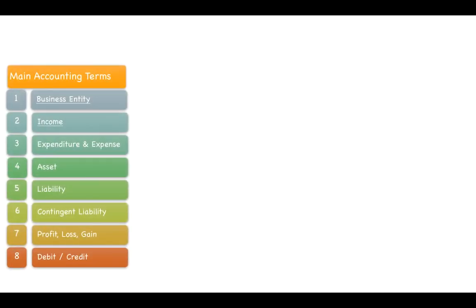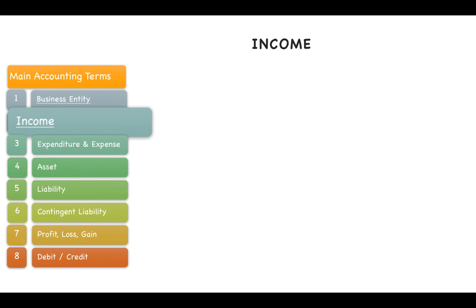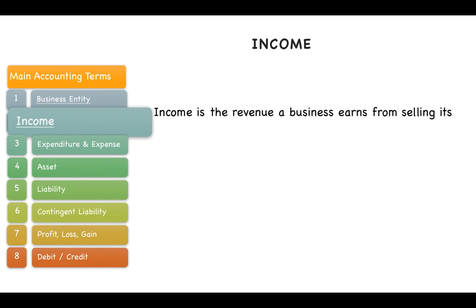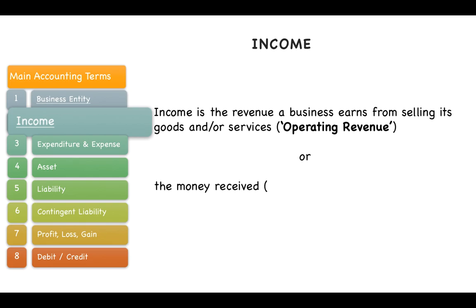The next term is income — a generic term you would have heard in many places. Formally, income is the revenue a business earns from selling its goods and/or services, in which case it is called operating revenue. Sometimes the business receives money from incidental sources other than its main activity.